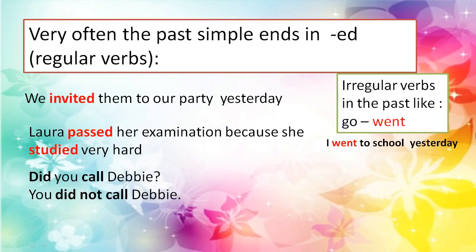Changing the form of the verb means an irregular verb. For example, go became went. Went is an irregular verb because it changes from the present go to the simple past went. But invite in the present becomes invited in the simple past without changing the letters — you just add ED, and that is called a regular verb.